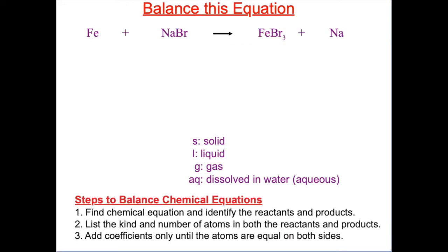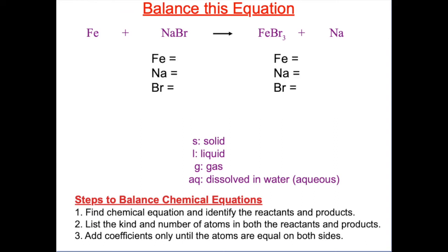Here's an equation for us to try. First, identify the reactants and the products. Then list the atoms on each side. We have iron, sodium, and bromine. On the reactant side, there's one iron, one sodium, and one bromine. On the product side, there is one iron, one sodium, and three bromines. So this equation is not balanced. The iron and the sodium are both balanced, so the bromine is not balanced — I'm going to start by balancing the bromine.